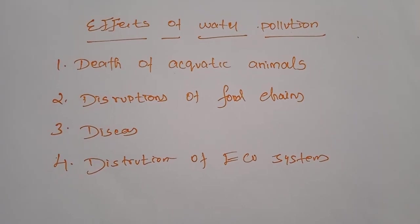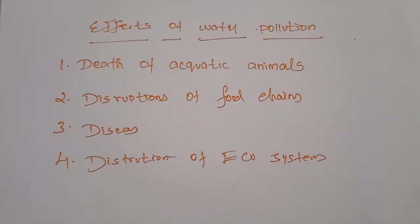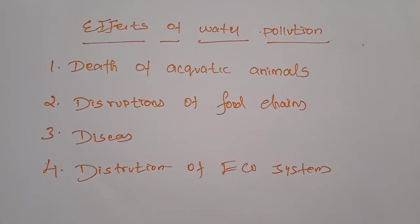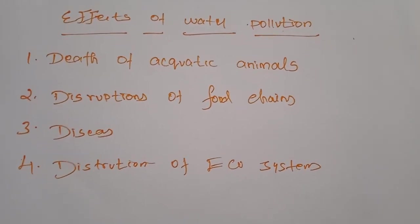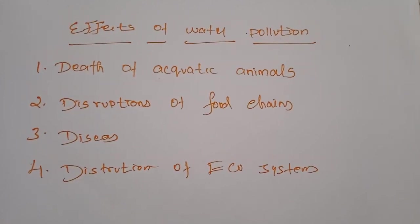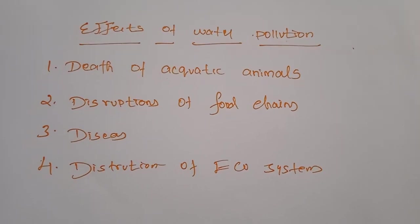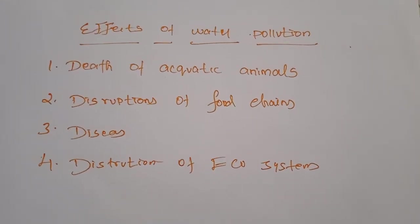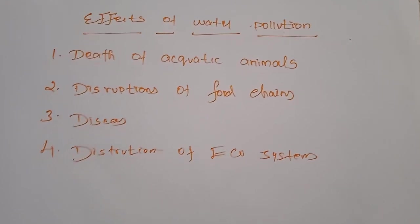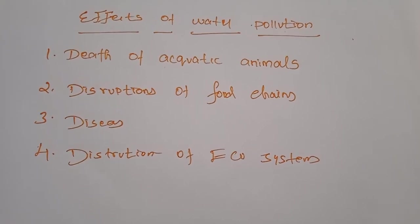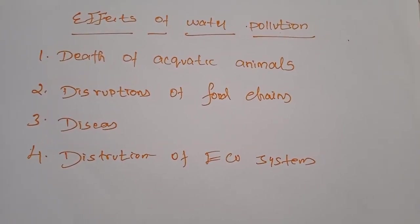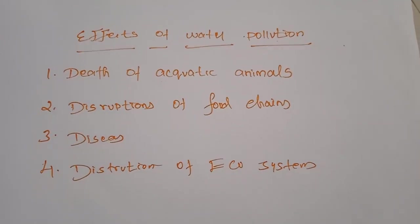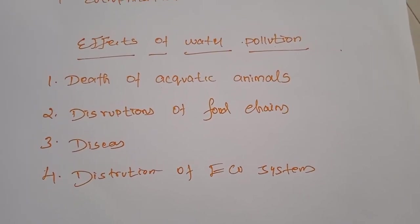What remedial measures are there to control water pollution? First, a comprehensive water management plan — the government must implement one. Next, the construction of proper storm drains and settling ponds. Local bodies and government must take action regarding solid waste dumping and establish separate places for it. Next, maintenance of drain lines — without proper drain lines, all sewage will mingle with water bodies. Next, regular monitoring of water and wastewater. Next, stringent actions against illegal dumping of waste into water bodies — without enforcement, people will never stop.